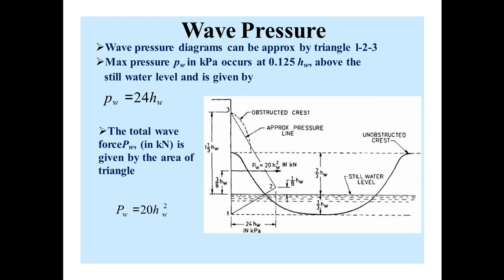Wave pressure diagrams can be approximated by triangle 1 to 3. As you can see in the figure triangle, this is 1 to 3, this is the triangle. So wave pressure can be approximately found out by this triangle 1 to 3. Maximum pressure Pw in kilopascal occurs at 0.125Hw above the still water level,